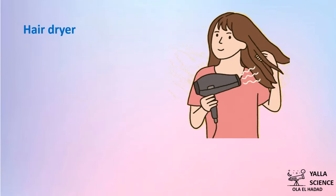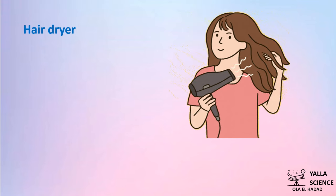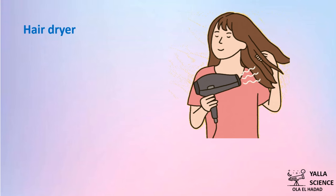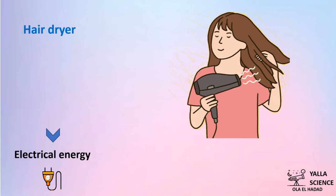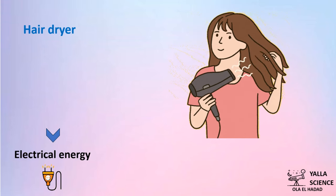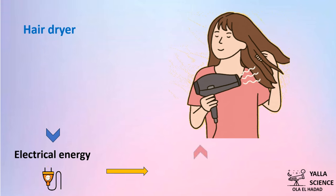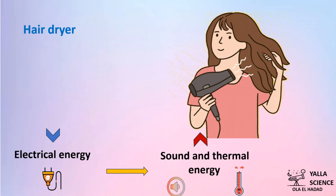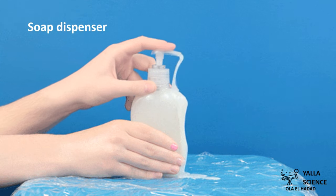In this radio, the output energy that comes out from the device is music — it's sound energy. Let's take more examples. The hairdryer is used to dry wet hair. What is the input energy that gets inside the hairdryer? It needs electrical energy to be operated. What is the output energy that comes out from the hairdryer? It's sound and thermal energy.